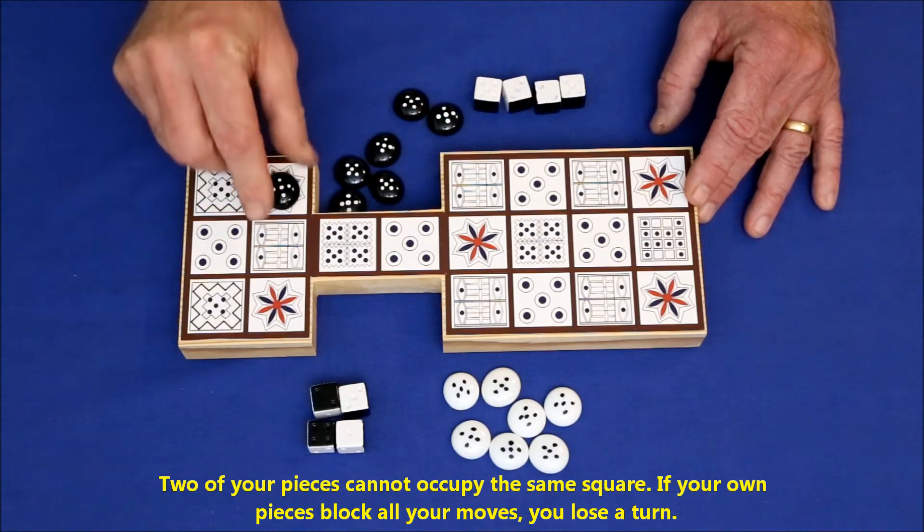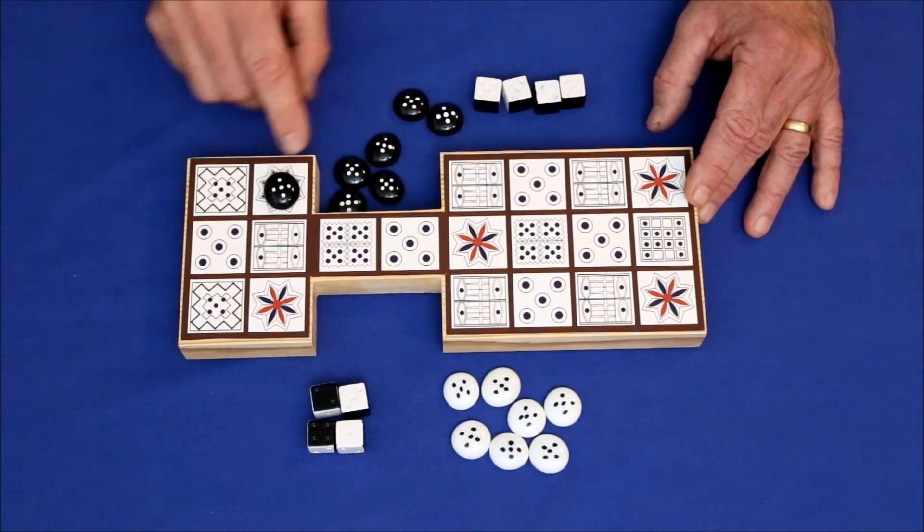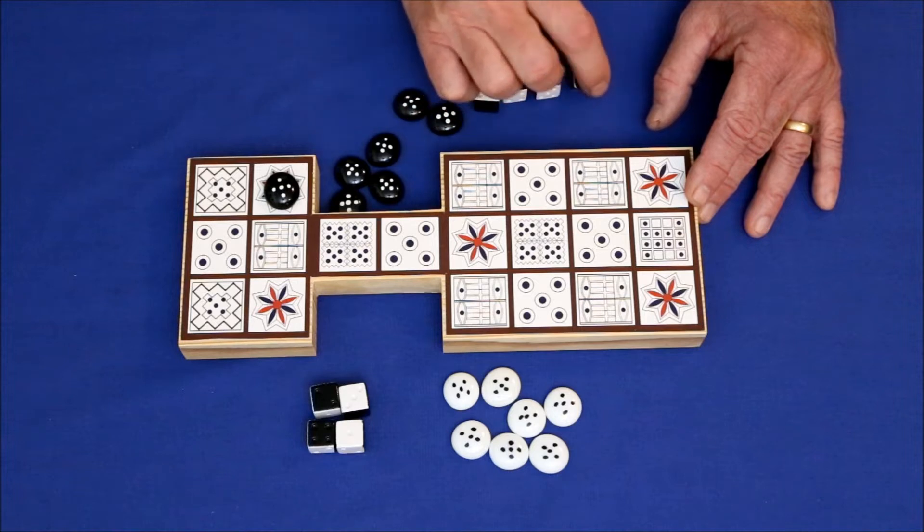To exit the play field, you have to throw an exact number to get this man off. For example, to get him off, you'd have to throw a one.